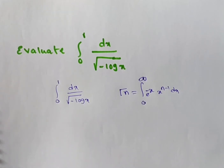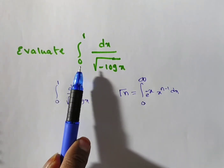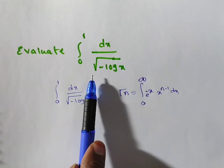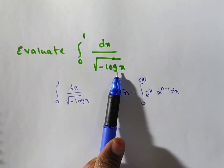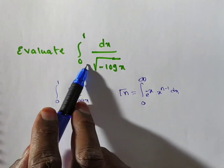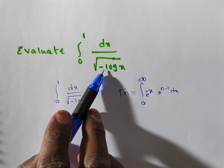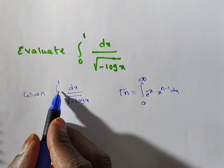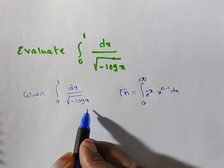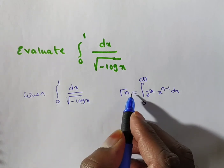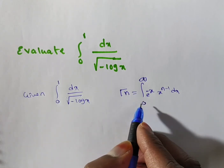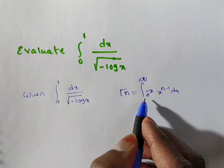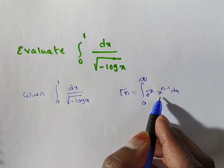Hi friends, in this video we are solving a problem on the gamma function — an application of the gamma function. We are given: evaluate the integral from 0 to 1 of dx divided by the square root of minus log x. We will do this problem using the gamma function. The definition of gamma function: gamma(n) equals the integral from 0 to infinite of e to the power of minus x into x to the power of n minus 1, dx.